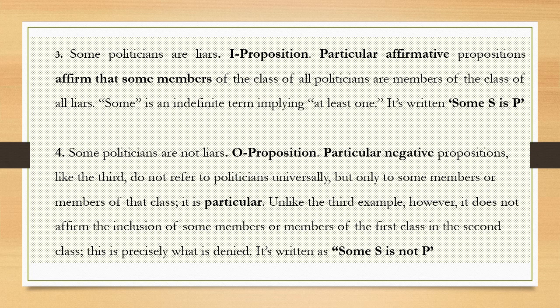The I proposition — 'Some politicians are liars' — is a particular affirmative proposition. It is particular because it talks about only some members of the class of all politicians, not all members. 'Some' here implies at least one. It is also affirmative because it is affirming something, not denying anything. The I proposition is written as 'Some S is P.'